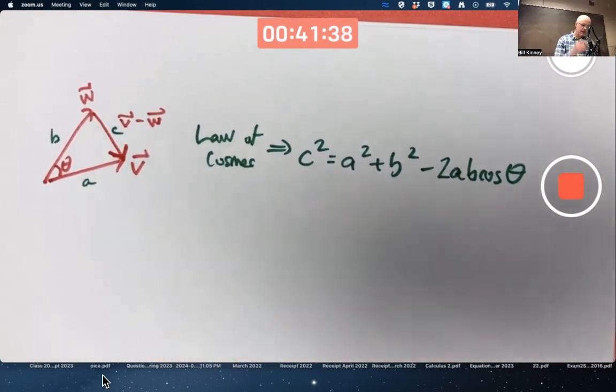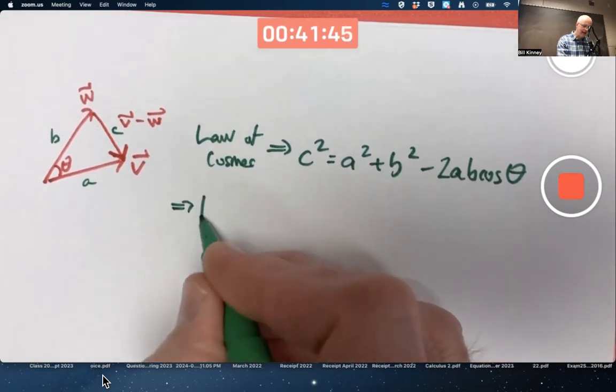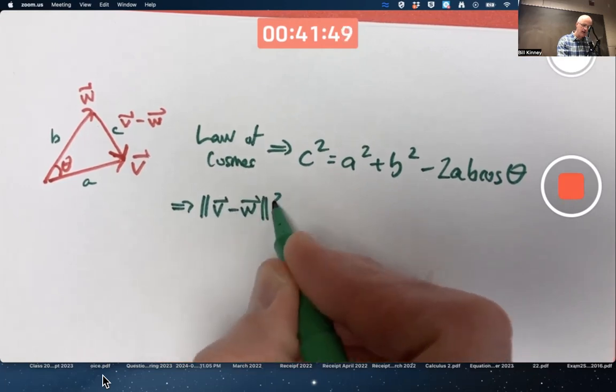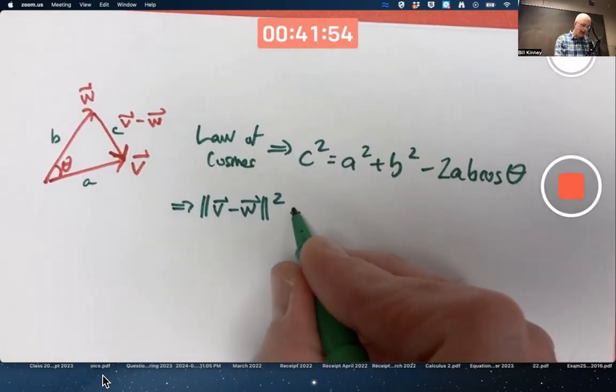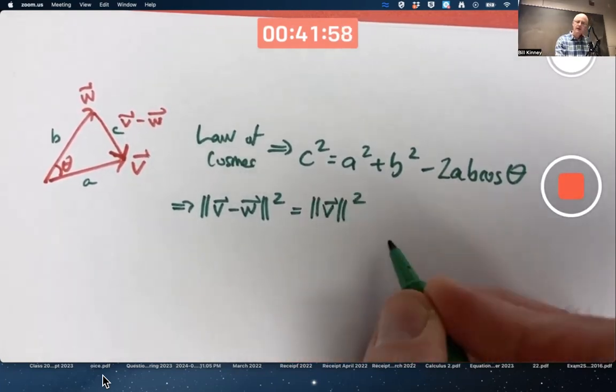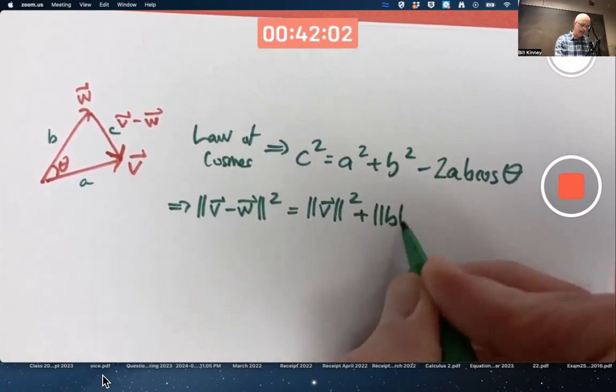In terms of the vectors, C squared is the same as the magnitude of V minus W squared. A squared is the same as the magnitude of V squared. B squared is the magnitude of V squared.